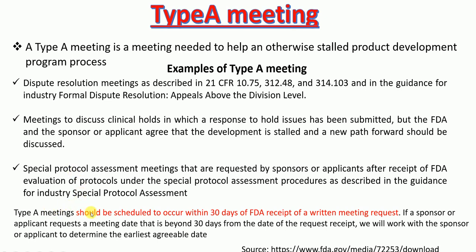A Type A meeting should be scheduled to occur within 30 days of FDA receipt of the written meeting request. If a sponsor or applicant requests a meeting date beyond 30 days from the date of the request, the FDA will work with the sponsor or applicant to determine the earliest agreeable date. Generally, the meeting should be scheduled to occur within 30 days of FDA receipt of the written meeting request.